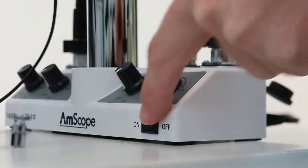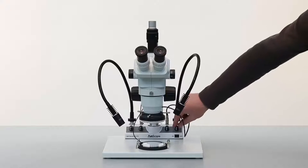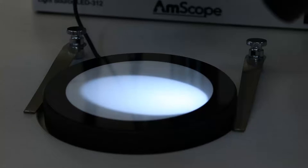Once the unit is plugged into an AC outlet, switch the power on. Each light has an independent control knob with variable intensity adjustment.